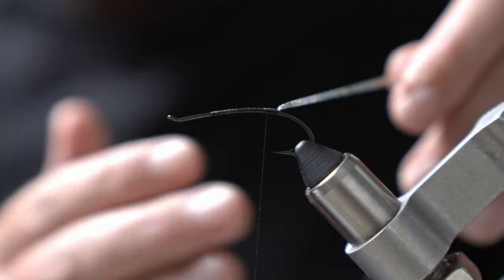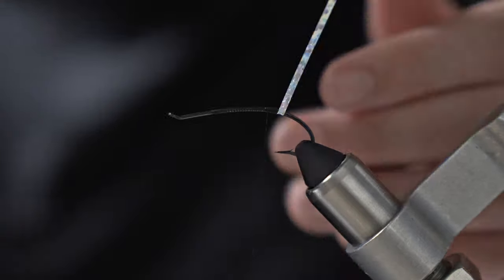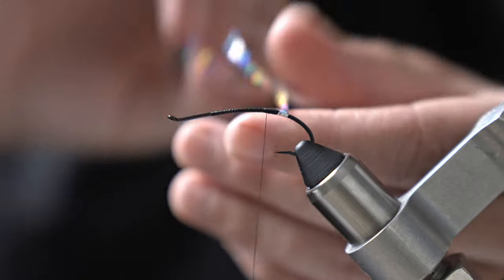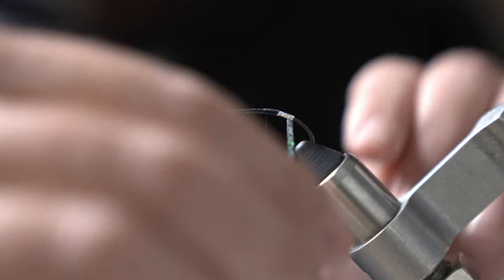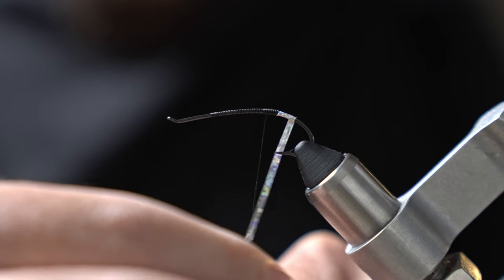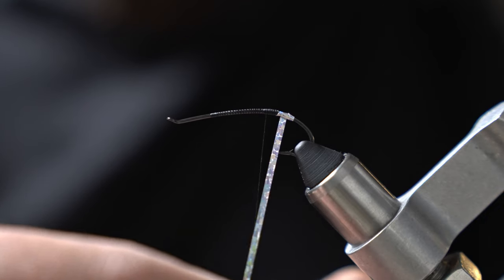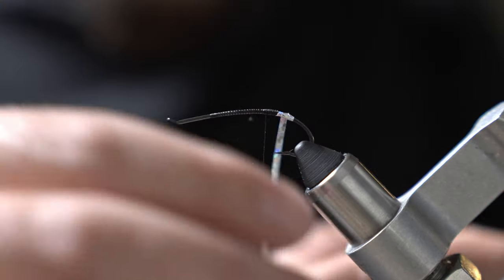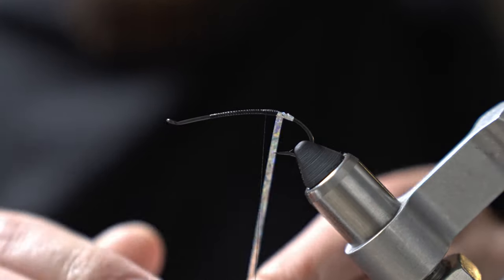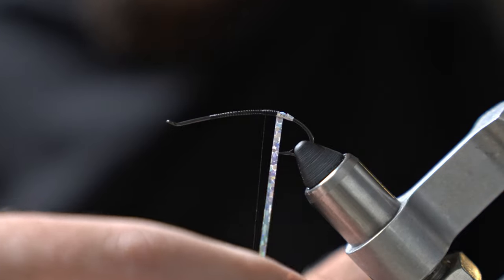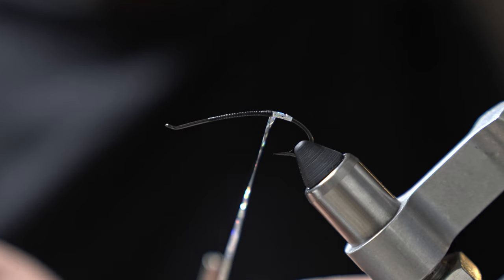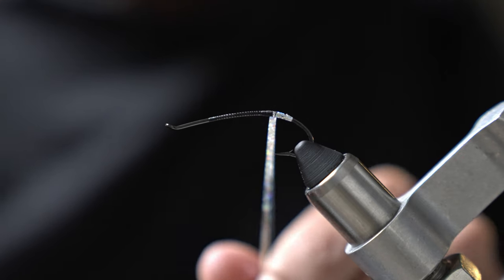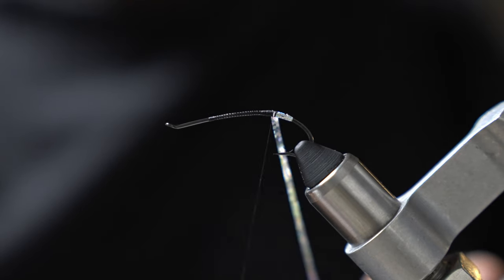So you want to tie that in at the point of the hook and you want to make your wraps towards the bend of the hook. And just give yourself a little bit of a tag there. So you're just going to wrap right about to where the barb is. It should only take about three or four wraps. Make sure they're nice and even, not leaving any hook exposed. And then go ahead and wrap back to where the thread is at the point of the hook and tie that off.